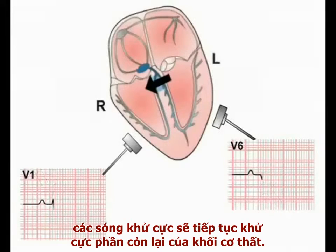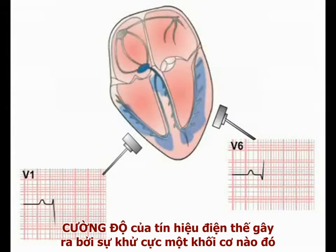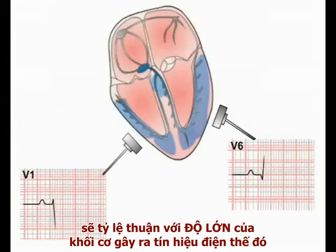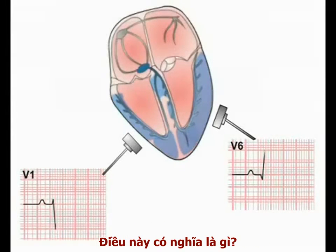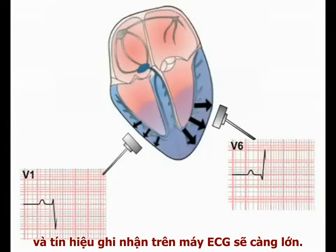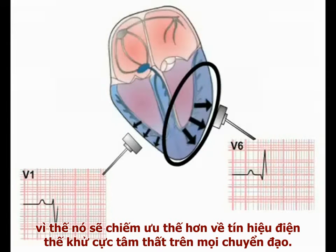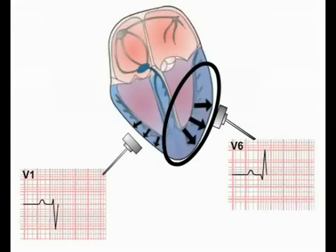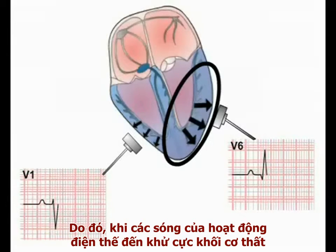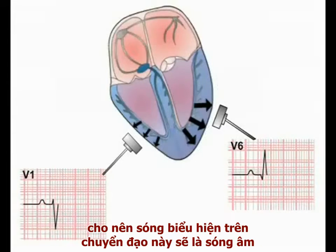As the septum continues to depolarise, the depolarisation wave spreads out over the muscle mass of the ventricles. The magnitude of the electrical signal generated by depolarising muscle is directly proportional to the mass of the muscle generating it — the more muscle present, the more electrical signal generated, and the more signal the ECG machine detects. The left ventricle has a much greater muscle mass than the right, and so dominates the electrical signal of ventricular depolarisation in all leads. Therefore, as the wave of electrical activity reaches the main muscle mass of the ventricles, the left ventricular signal overwhelms all other signals, and as it is moving away from V1, the deflection produced on the ECG recording from this lead becomes negative.